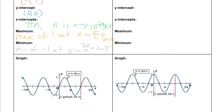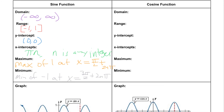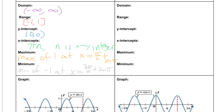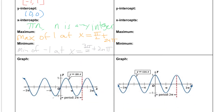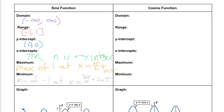Next let's take a look at our cosine function, which is very similar to our sine function. Looking at the domain — the x values — our cosine function continues to the right and to the left, just like the sine graph. So the domain of our cosine function is also from negative infinity to positive infinity.